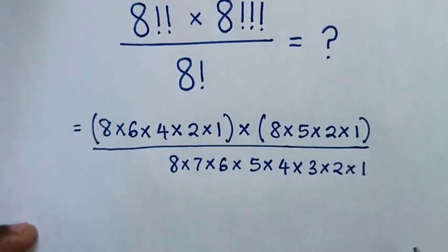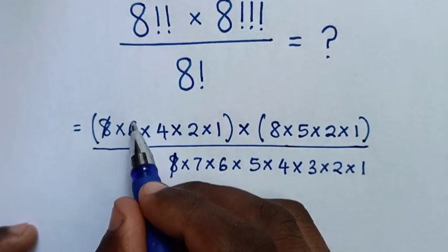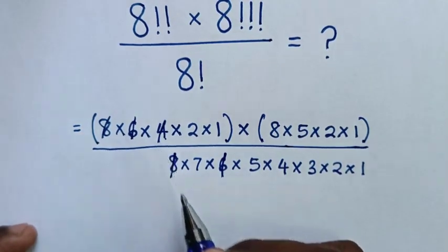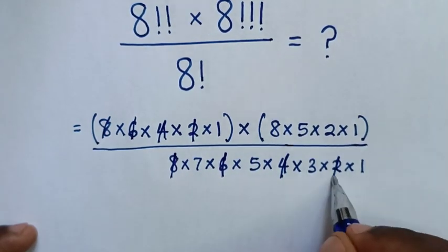Then in next step, to simplify, this 8 will cancel with this 8, this 6 will cancel with this 6, 4 will cancel with this 4, and this 2 will cancel with this 2.